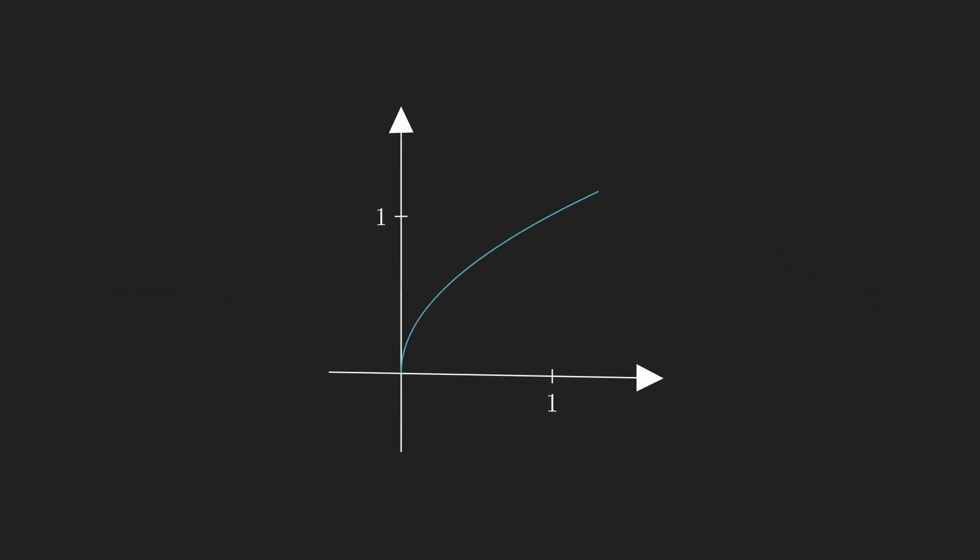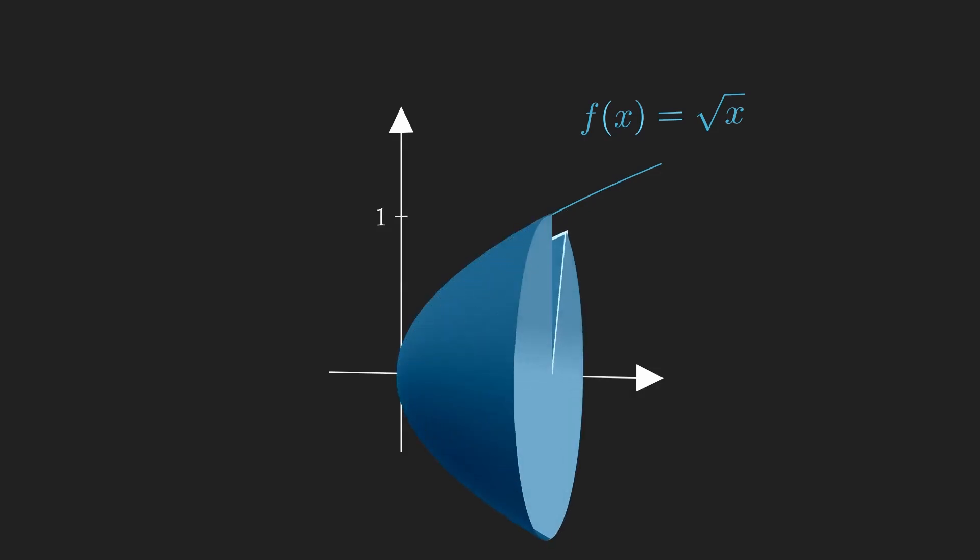Consider the function f of x equals the square root of x. Take the area under the curve from 0 to 1, revolve it around the x-axis, and now ask yourself what the volume of this solid would be.